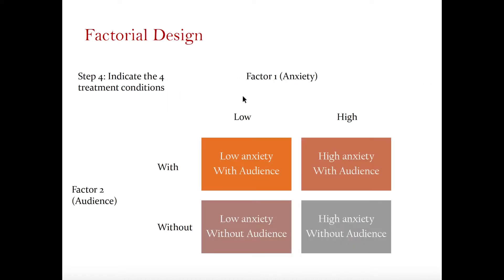Here is an example of a situation with two independent variables. Factor one is anxiety, with two levels: low anxiety and high anxiety. Factor two is having an audience, with levels: with audience and without audience. In this case, we use what we call two-way analysis of variance. But that is not what we will focus on today — what we will talk about is one-way analysis of variance, particularly between subjects.